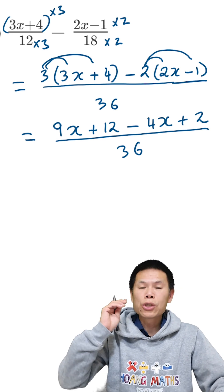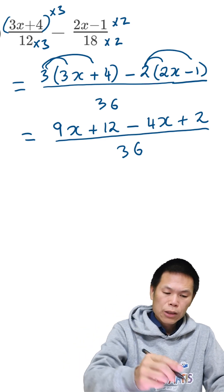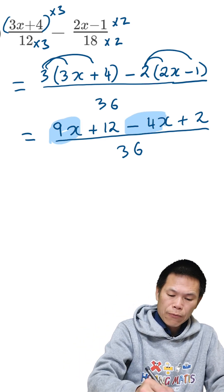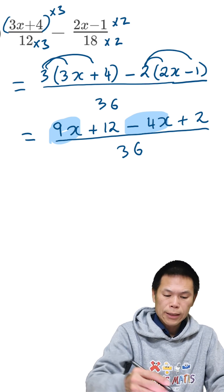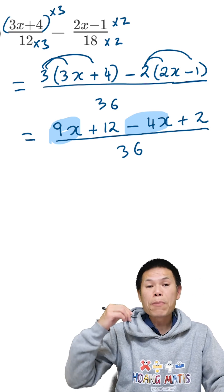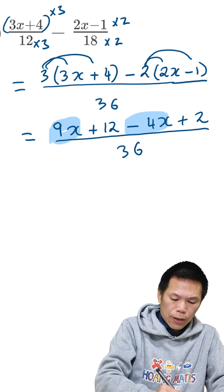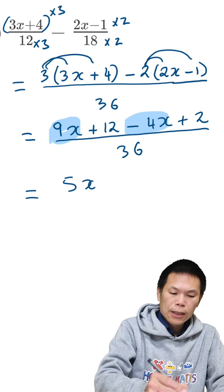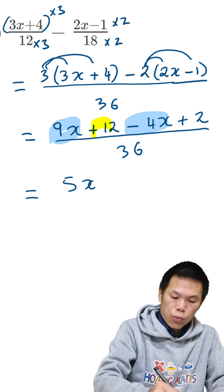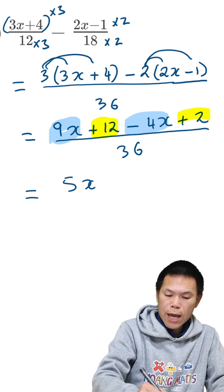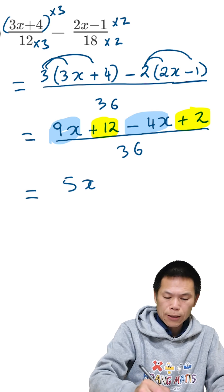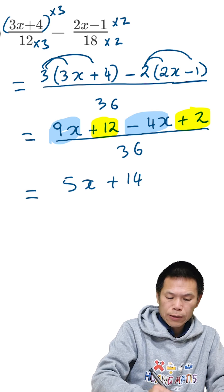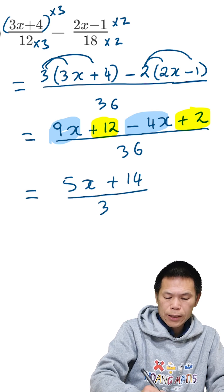So now we just need to collect the like terms. So we have 9x and we have minus 4x. So 9 minus 4 is 5, the answer is 5x. Then we have 12, we add 2, that gives me 14, so we add 14. Over 36.